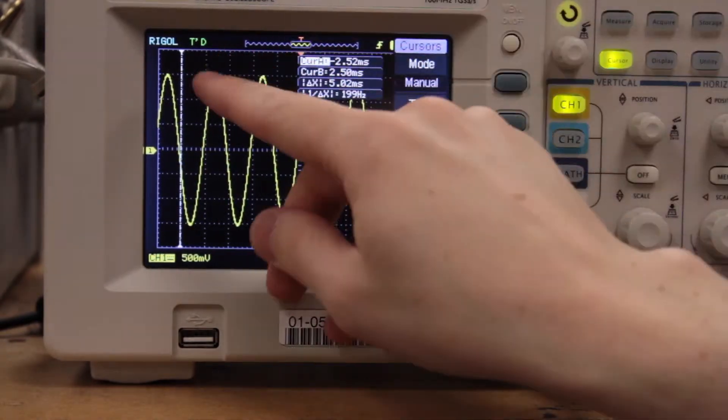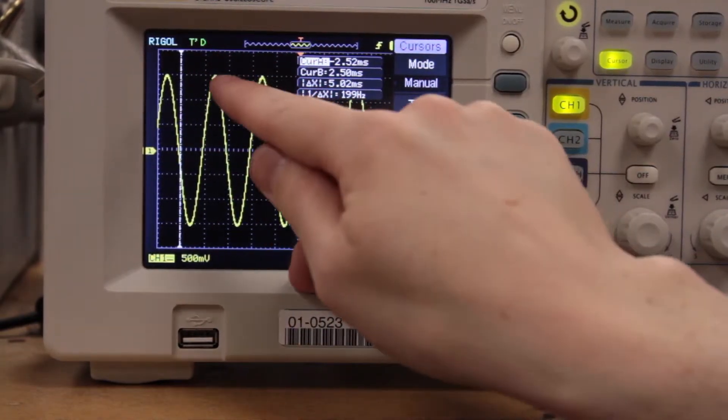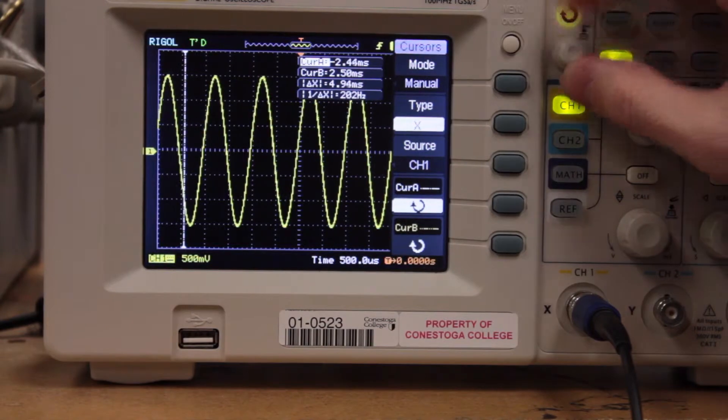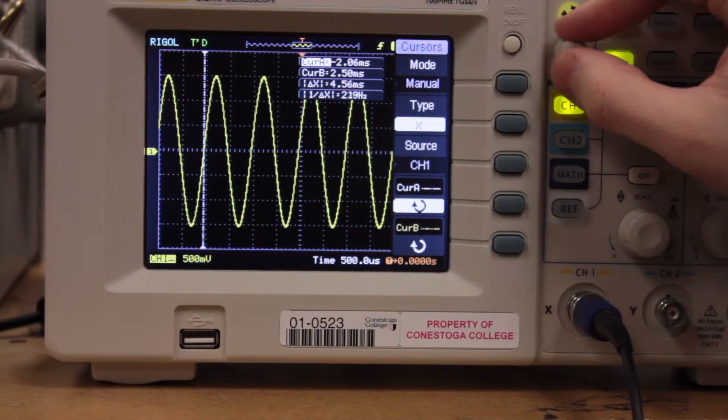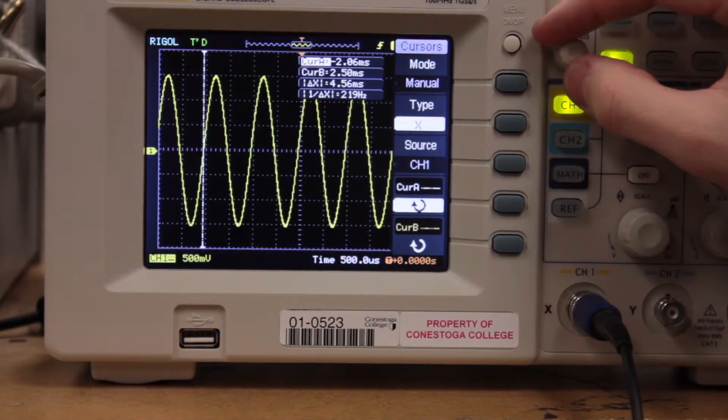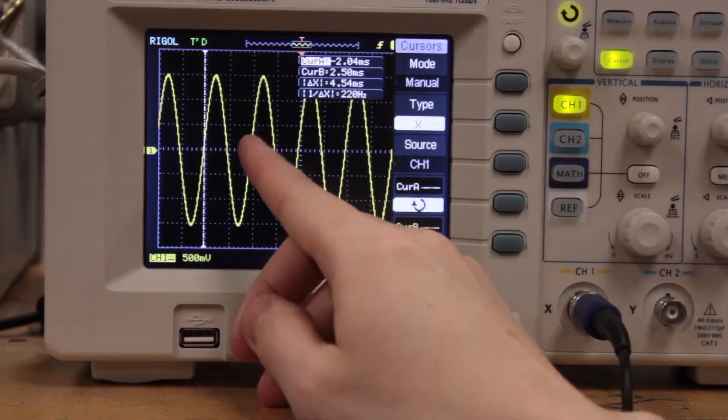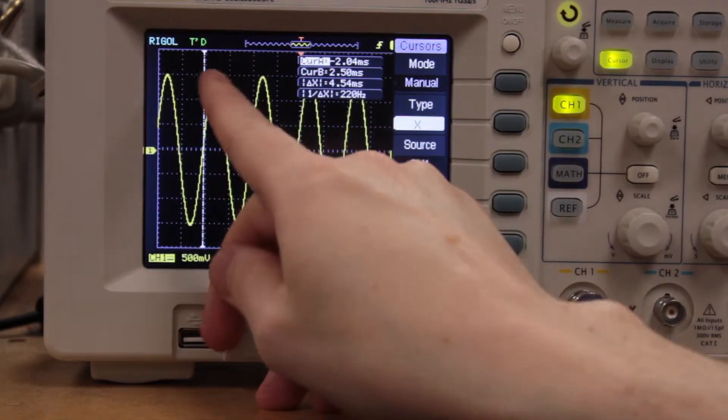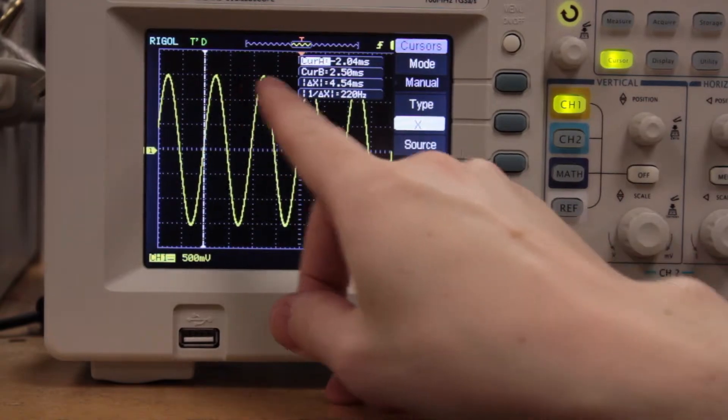I'm just going to go with the peak here because I can see two peaks quite easily. What we want to do is we want to measure one full cycle. So that could be from here to the next time it crosses in the positive direction which would be here, or it can be this peak to this peak which is what I'm going to measure.